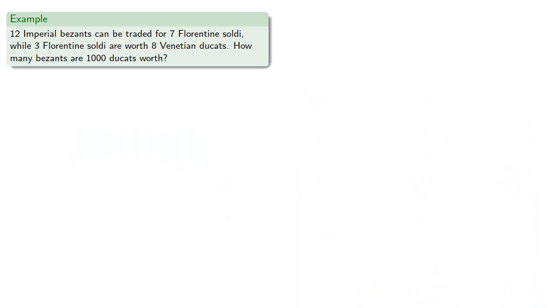We have one thousand ducats, and we want to have besants. We are told that three soldi are equivalent to eight ducats, so a couple of different forms of one are available. We want to eliminate ducats, so we will use the form that eliminates ducats.